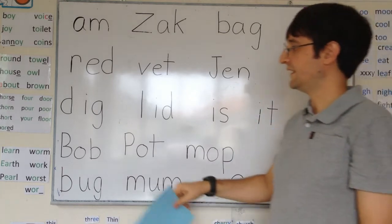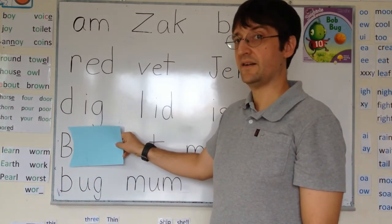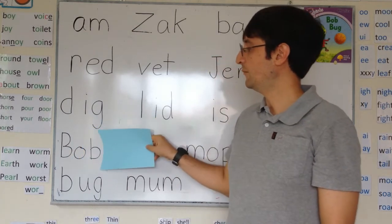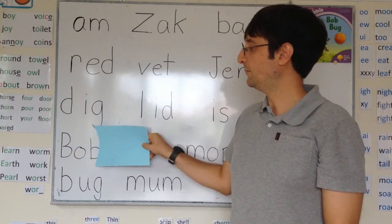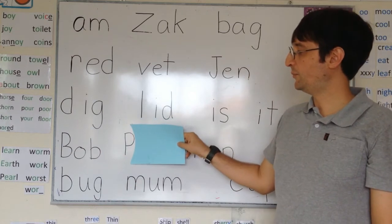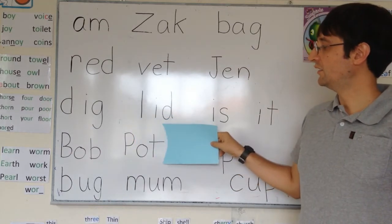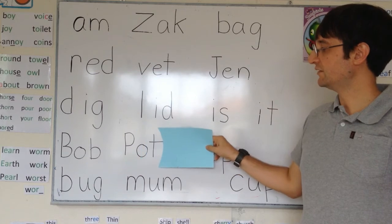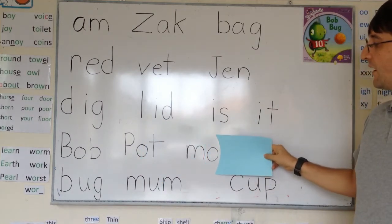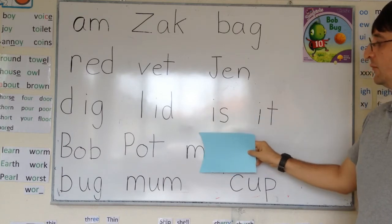Now let's do some ah sound words. B... A... Bop. B... Bob. P... A... Pot. T... Pot. M... A... Mop. P... Mop.